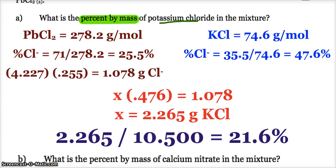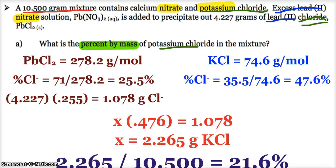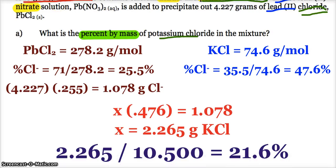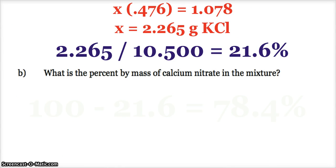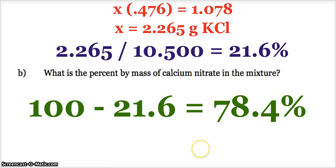Now as a reward for solving that extremely challenging question, figure out part B. What is the percent by mass of calcium nitrate in the mixture? Okay, it was a mixture of calcium nitrate and potassium chloride, two things, and it equaled 10.5 grams. So if I know the percent of one of the things, I just subtract from 100, and I know that the calcium nitrate is 78.4%.